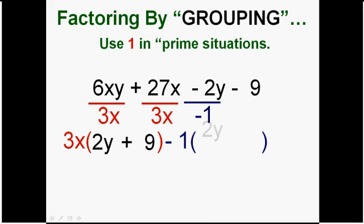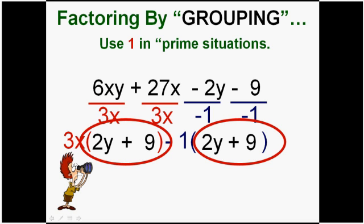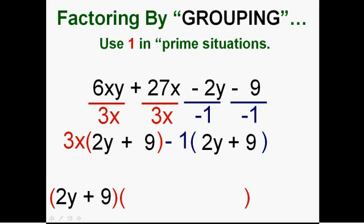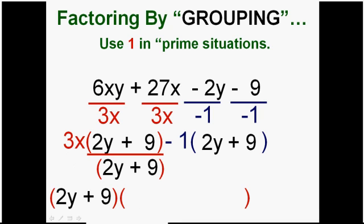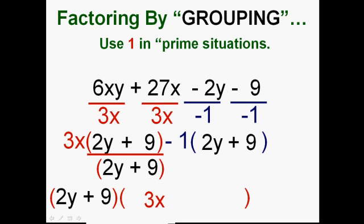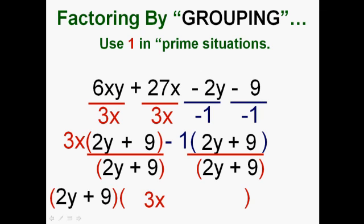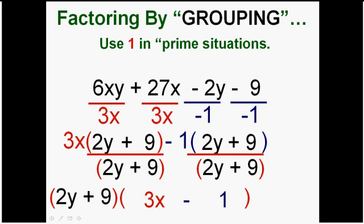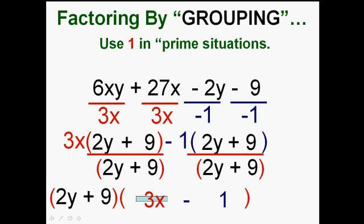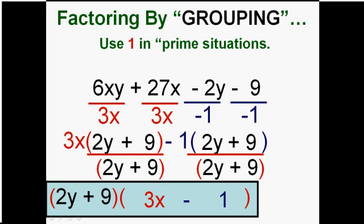Dividing this by negative one I get positive 2y. Oh this is cleaning up. Dividing this by negative one I get plus nine, and oh we've got a nice match and we can do it again. We can do the grouping technique again. Taking out the 2y plus nine from the red group we get 3x. And from the blue group 2y plus nine we get, remember what we took out, a minus one. And son of a gun. It doesn't get any harder than that.